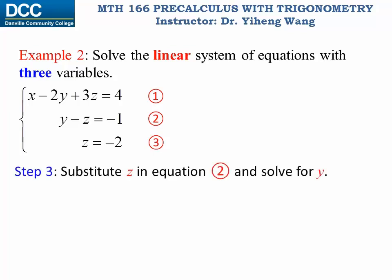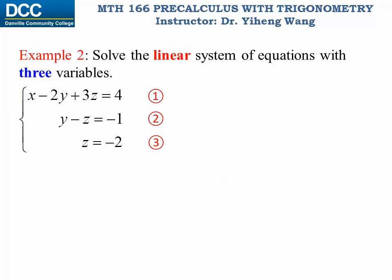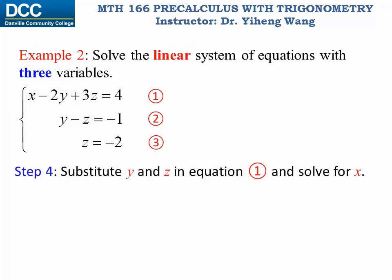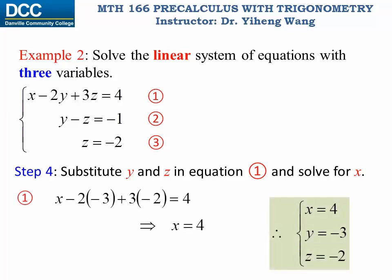Now equation three is replaced by the new equation. You might notice that now this system looks exactly the same as example one, and from here we can easily solve it using back substitution. We substitute z equals negative two into equation two and solve for y, then substitute both y and z into equation one and solve for x. The solution is exactly the same as in example one.